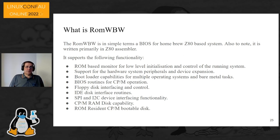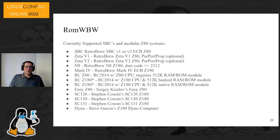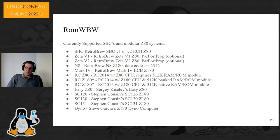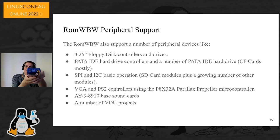The ROM-resident CP/M bootable disk provides very basic functionality but it works beautifully, taking us back to the days of ROM-bootable systems like the old classic Macs. The systems currently supported include the Zeta 2, RC2014, SC126, SC130, and SC133. The SC133 is a CP/M machine that fits in your pocket — just plug it into your USB port. It does have an SD card slot as well as VGA and PS/2 support using the Parallax Propeller microcontroller, and support for sound cards.